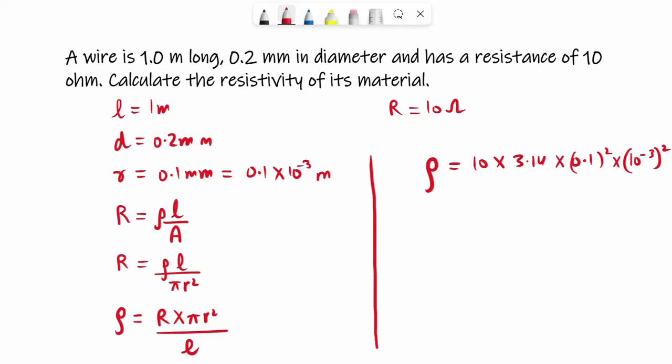So ρ is equal to 10 × 3.14 × r² is 0.1² × 10 to the power minus 3 squared as well, because square will be on both of them. Then L, L is nothing but 1, so that means I just have to solve the numerator to find the value of ρ. So 10 would be as it is, 3.14 is there, what is the square of 0.1? It would be 0.01.